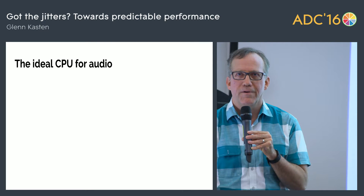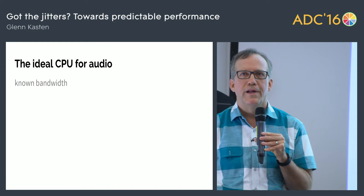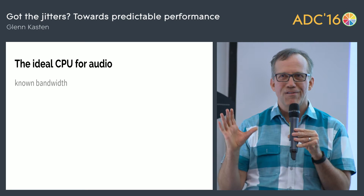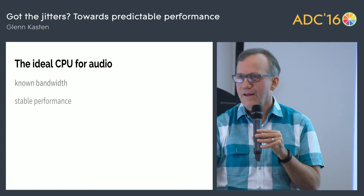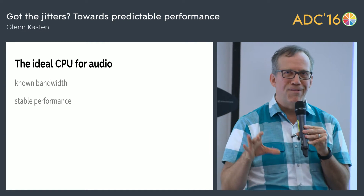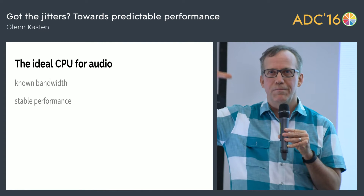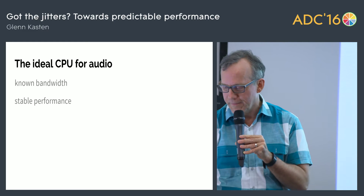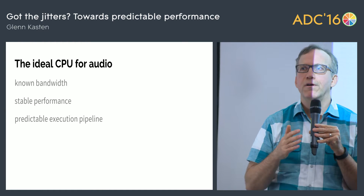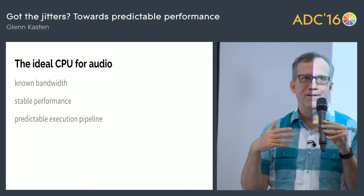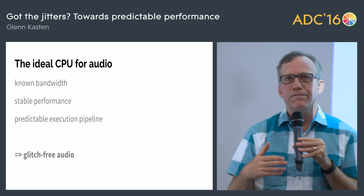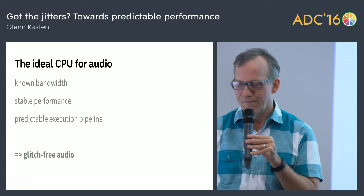First, the ideal CPU for audio — this is my favorite CPU. It would have a known bandwidth: whether it's 400 megahertz, 800 megahertz, or 2 gigahertz, you would know what it is. That clock rate would stay stable and never change, even when you release the sustain pedal — so that when you hit that crashing chord, it's ready with no glitching. The execution pipeline would be predictable: no caches, no out-of-order execution with unpredictable execution times. The result is very predictable performance, which means no glitches — and that's what we all want in audio.